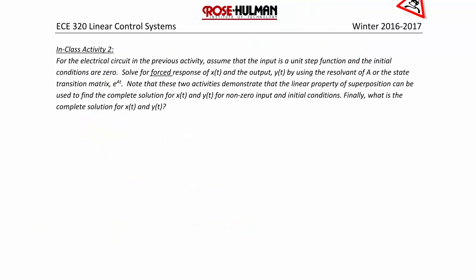In-class activity 2: For the same electric circuit, assume the input is a unit step function and initial conditions are zero. Solve for the forced response of x(t) and output y(t) using the resolvent of A or the state transition matrix e^(At). Note that these two activities demonstrate that the superposition principle can be used to find the complete solution for non-zero input and initial conditions. What is the complete solution for x(t) and y(t)?